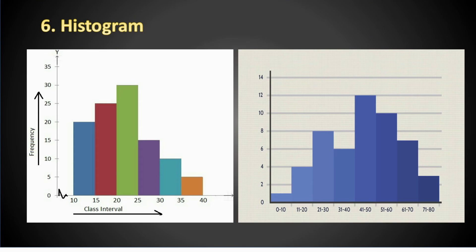The PMP Histogram provides information about a process in terms of time and the occurrence of specific aspects. Instead of an overwhelming list of numbers, the histogram conveys critical information with an image.